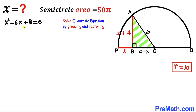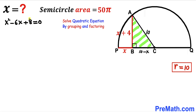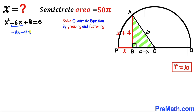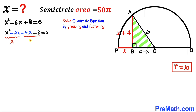We now have the quadratic equation x² − 6x + 8 = 0, which we'll solve by grouping and factoring — you may use the quadratic formula as well. Focusing on the constant 8, it can be broken down as 2 times 4, and 2 plus 4 equals 6, matching the middle term. So we can rewrite the middle term −6x as −2x − 4x.